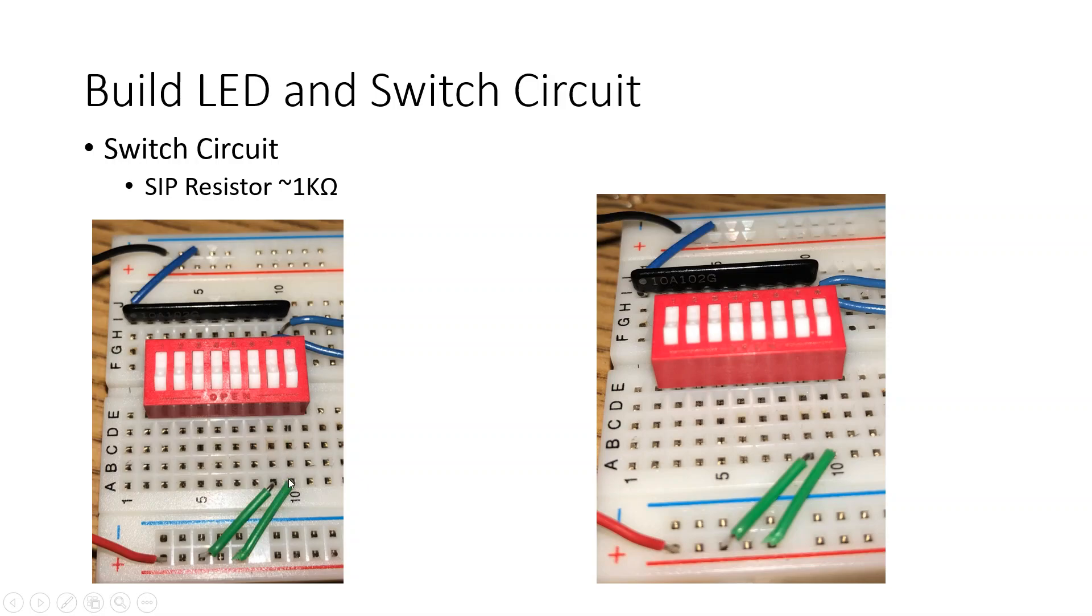It's also important to note that as we go through our circuit, we start maybe on the power rail, we go across, we come to the side of the switch. On the opposite pin on this side of the switch, we should have a continuous line here to the SIP resistor pack. Make sure we don't forget this, especially the 1k ohm resistor.